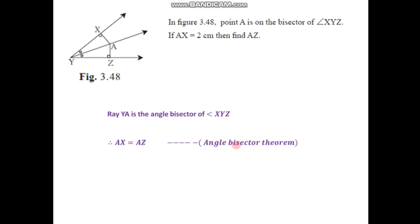From that we can write AX is congruent with AZ, that is AX equals AZ, by the angle bisector theorem. The length of AX is given as 2 cm, and since AX equals AZ, the length of segment AZ must also be 2 cm. This is how we find the length of segment AZ using the angle bisector theorem.